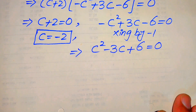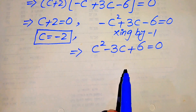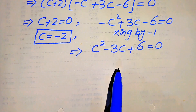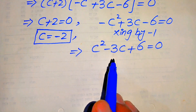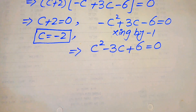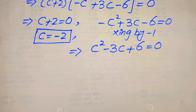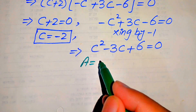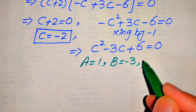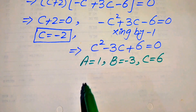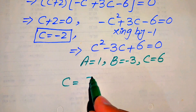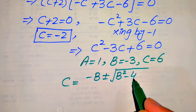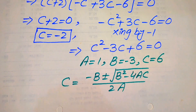There are three methods to solve a quadratic equation: factorization, completing the square, and the quadratic formula. Here we apply the quadratic formula. The coefficients are a equals 1, b equals minus 3, and c equals 6. The quadratic formula is: c equals [minus b ± square root of (b squared minus 4ac)] divided by 2a.